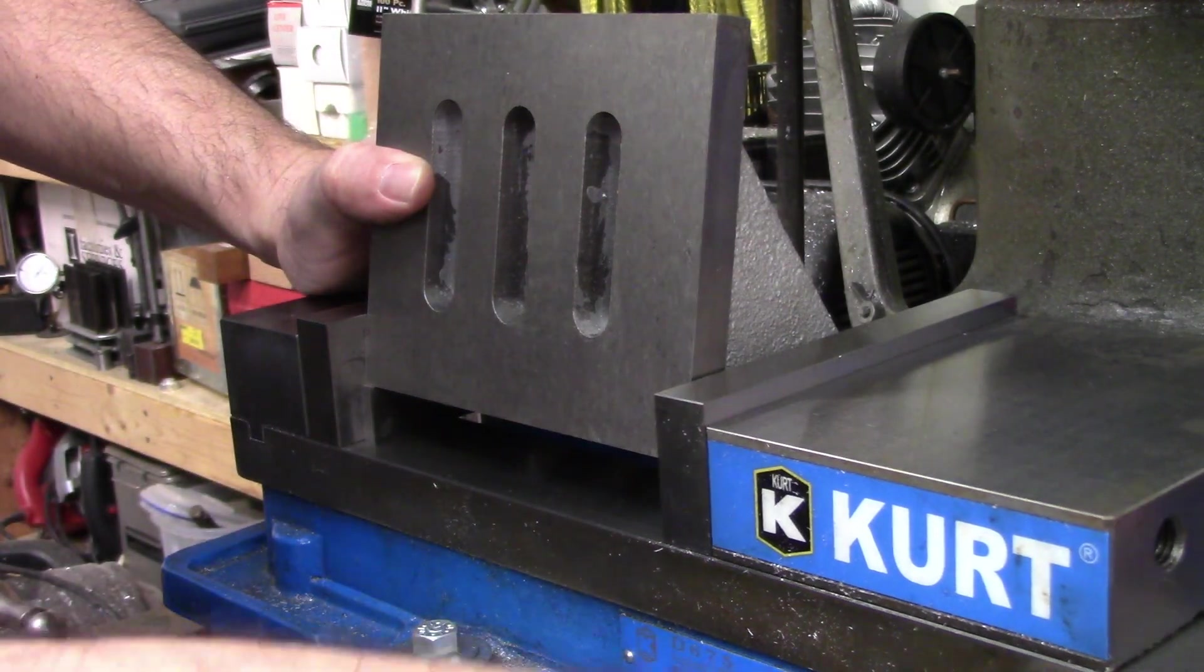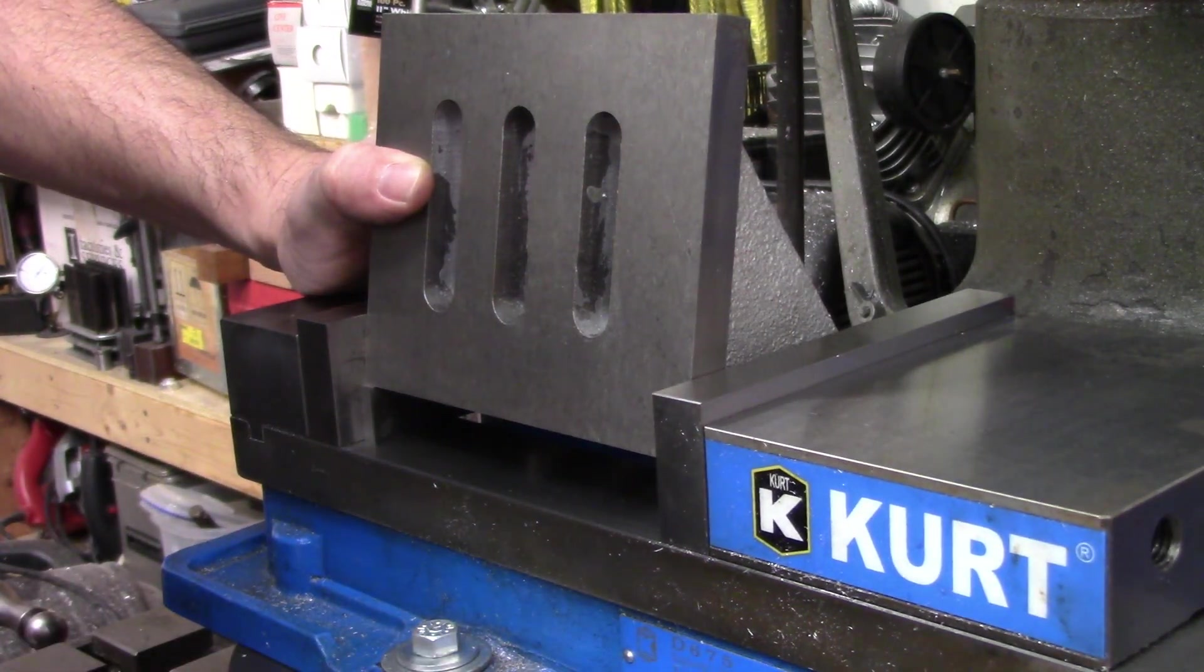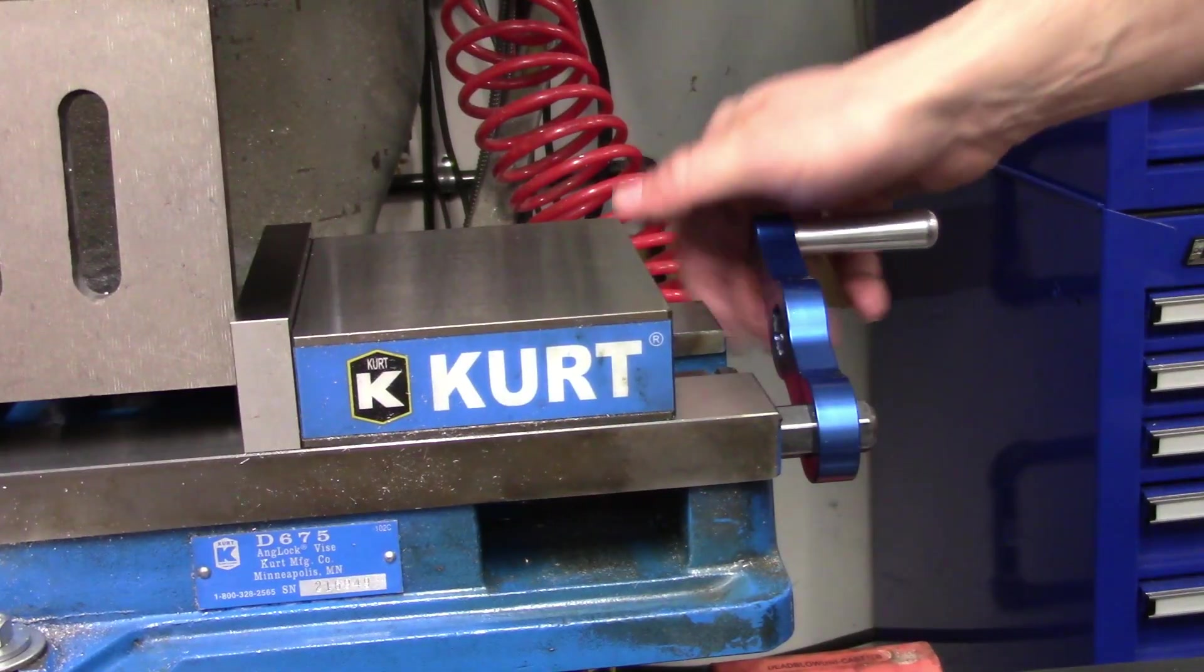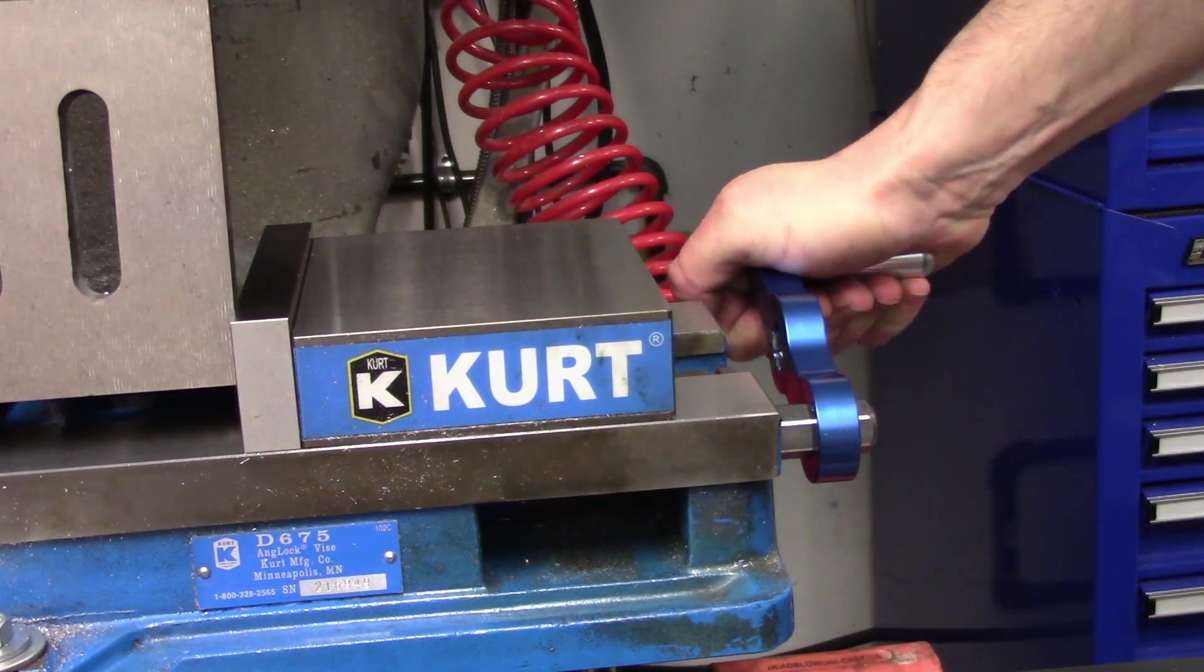The tolerance on my angle is relatively loose at plus or minus one degree, so this should be more than good enough. If it was any tighter, I would use a sine bar.